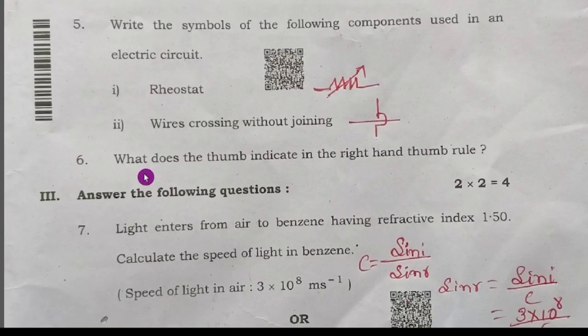Next, sixth question: what does the thumb indicate in the right hand thumb rule? In the right hand thumb rule, the thumb indicates the direction of the current. That is the correct answer, the direction of current.